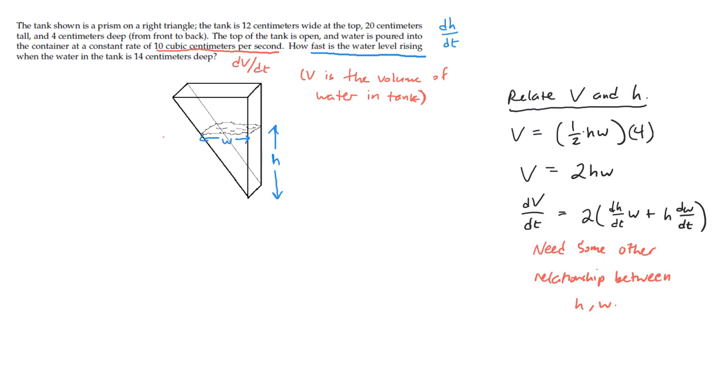And thankfully, we have the tools we need to get one, because we know that this right triangular prism always has a certain proportionality to it. We know that the top of this tank was specified to be 12 centimeters wide, and the overall height of the tank was 20 centimeters. That proportion, let me draw that over here. That 12 to 20 proportion is going to be maintained even if we have a smaller triangle sitting inside of this.